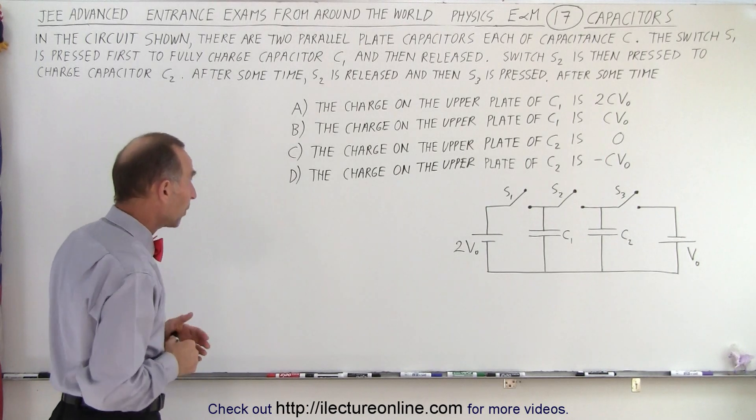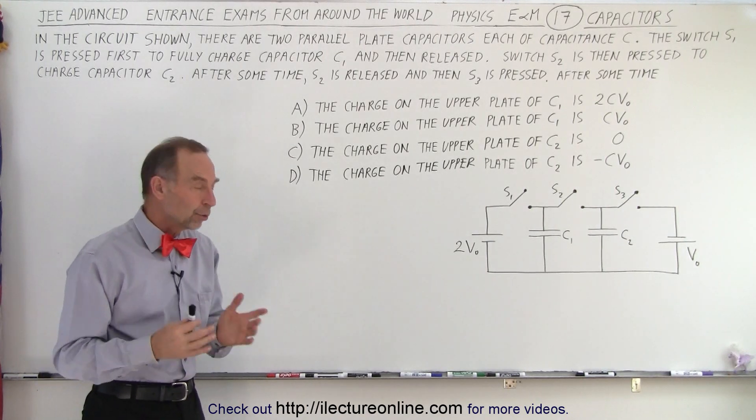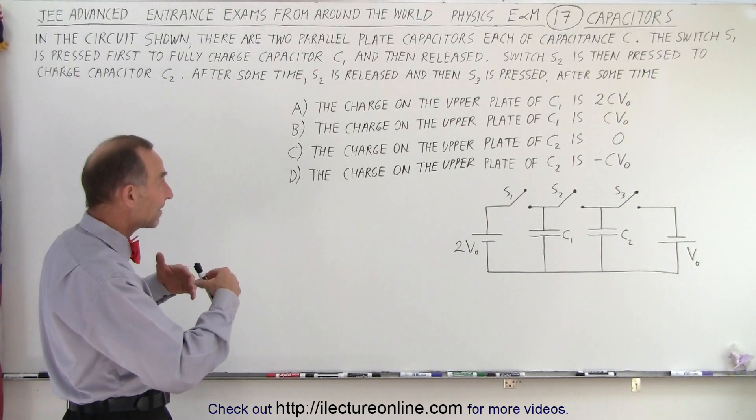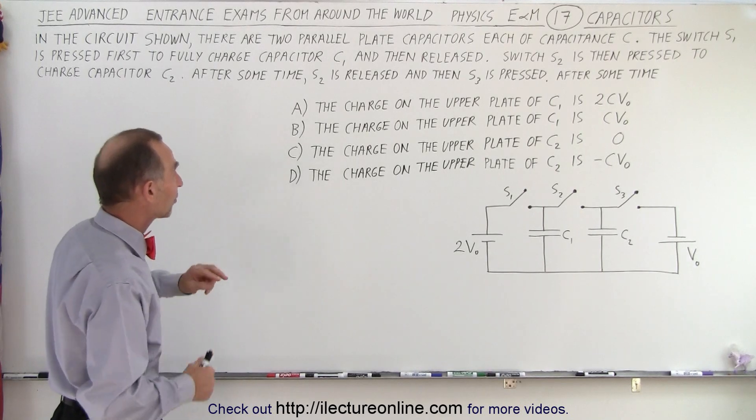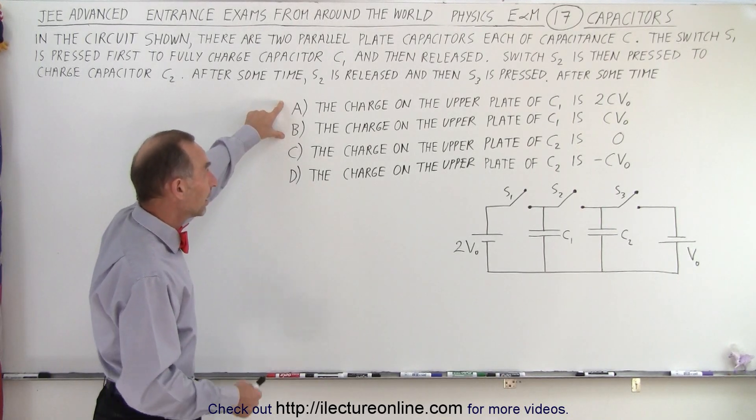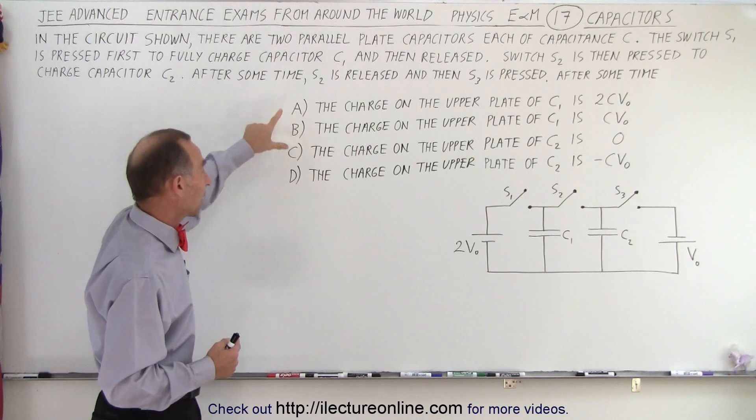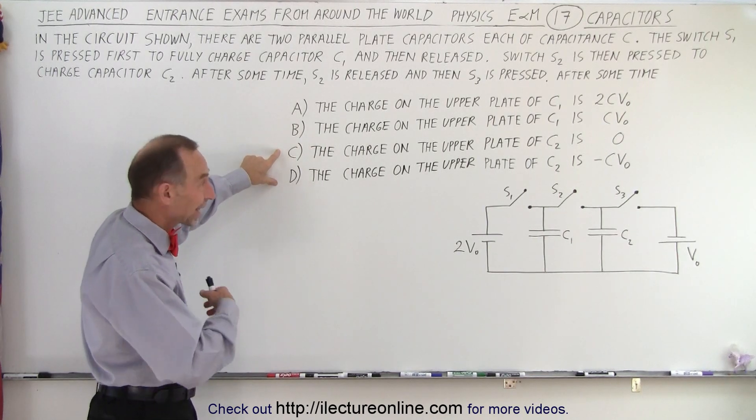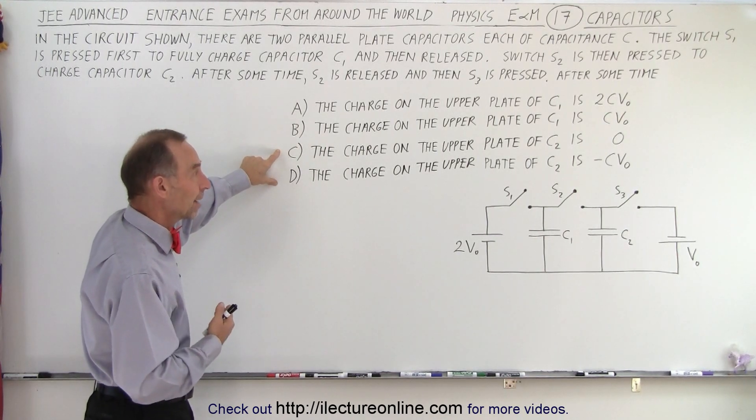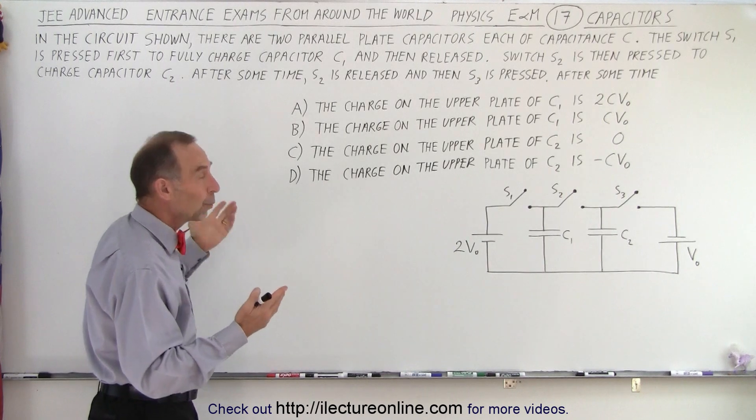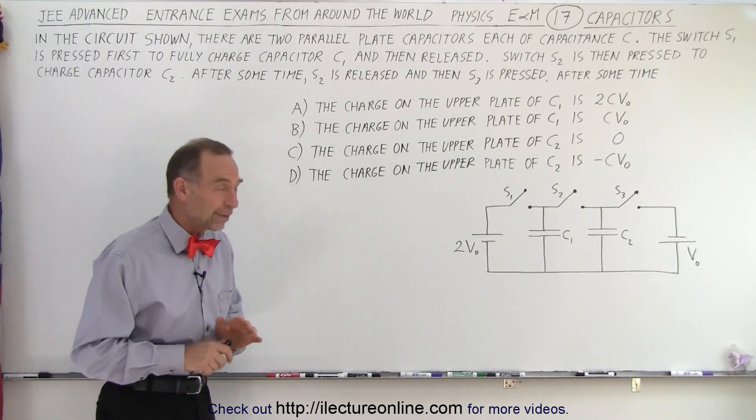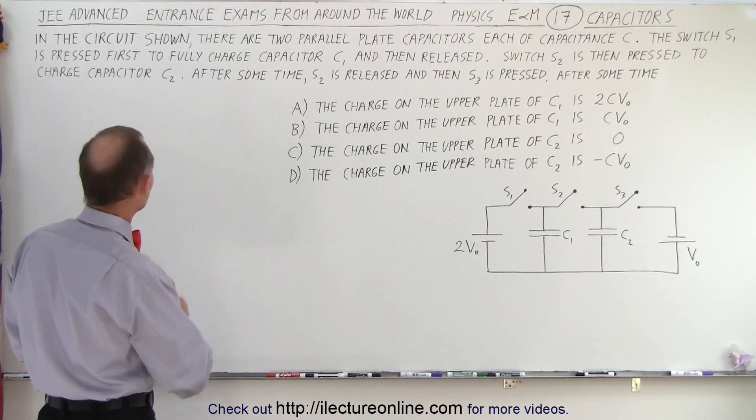And so then we have four possible answers, any one of them which could be correct or it could be a set of them being correct. Now obviously if you take a look at A and B, they cannot be correct at the same time, and if you look at C and D, they cannot be correct at the same time. So possibly one, possibly two, but not more of the answers should be correct. So let's read the question.